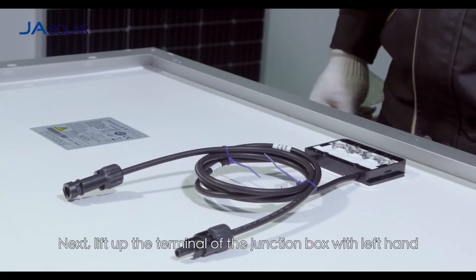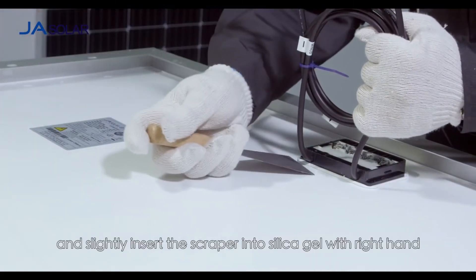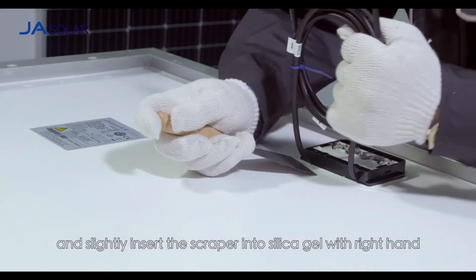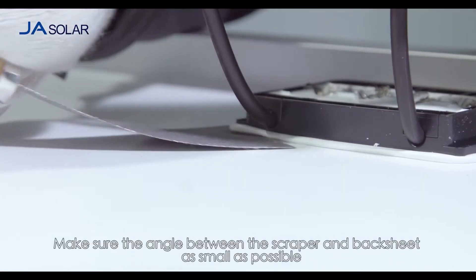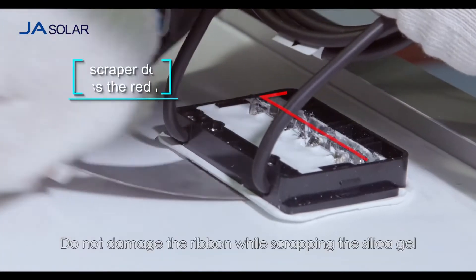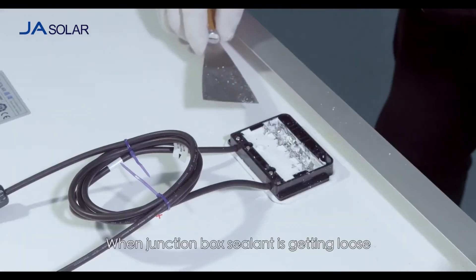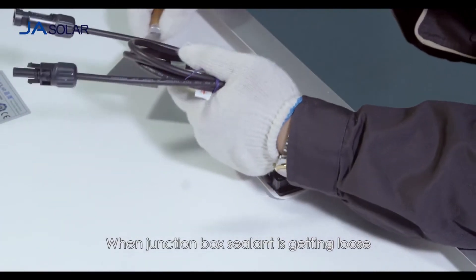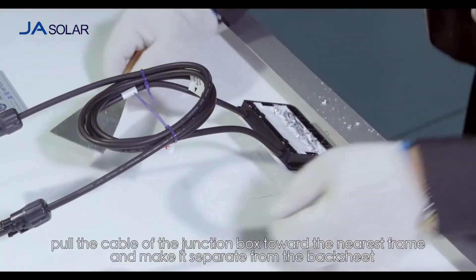Next, lift up the terminal of the junction box with left hand and slightly insert the scraper into silica gel with right hand. Make sure the angle between the scraper and back sheet is as small as possible. Do not damage the ribbon while scraping the silica gel. When junction box sealant is getting loose, pull the cable of the junction box toward the nearest frame and make it separate from the back sheet.